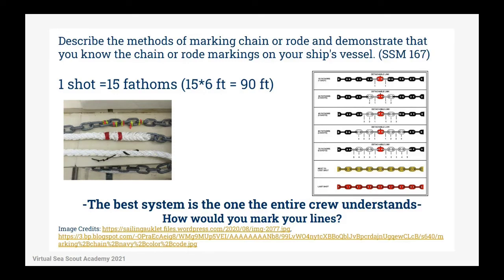Now that you know the parts of a rode, sometimes it can be hard to know where you are when it's all on a spool or in an anchor pool. Part of using rodes is a system based on marking distances, and we call those distances one shot. We label each shot on the rode, and this helps us know how much we have left. One shot is equal to 15 fathoms, and if you recall, a fathom is six feet. So when we say we have 15 fathoms, we have 90 feet — one shot is equal to 90 feet.